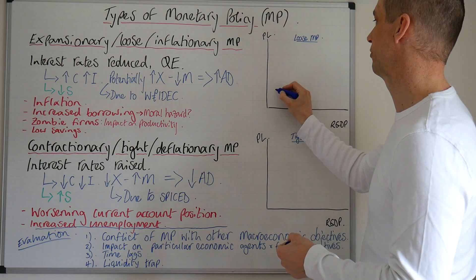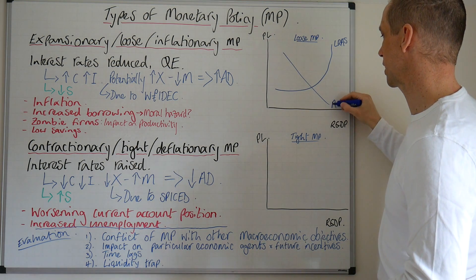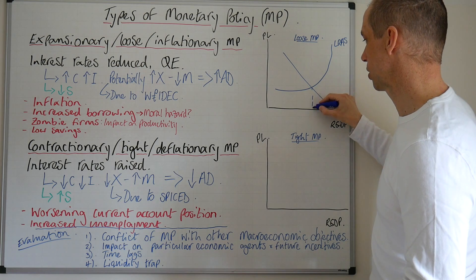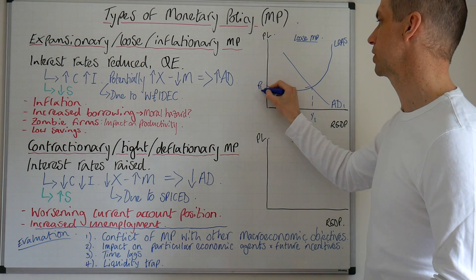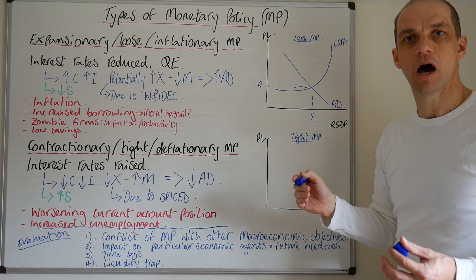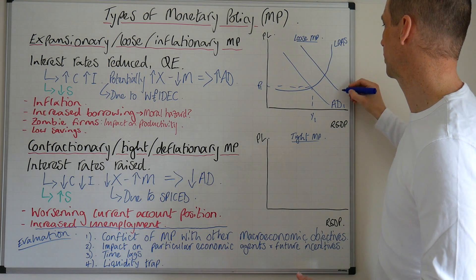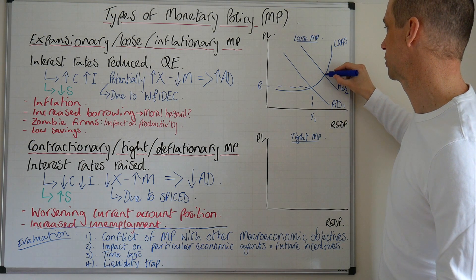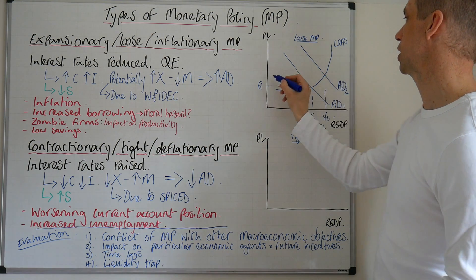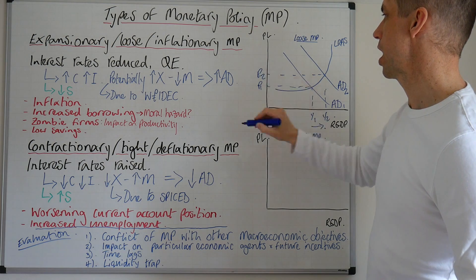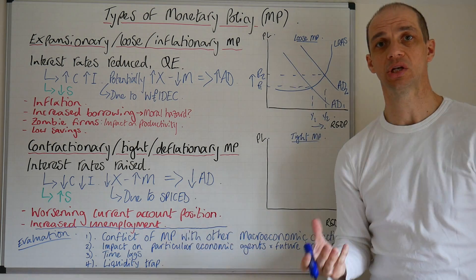Let's consider a Keynesian style diagram illustrating the actual impact of such a policy. We can see the economy is initially at point Y1, corresponding to a price level of P1. As aggregate demand increases due to that reduction in interest rates or quantitative easing, aggregate demand shifts outwards and we can therefore see that we achieve Y2 — an increase in real GDP — which is also consistent with an increase in the price level.